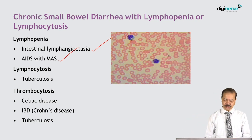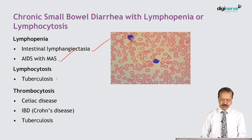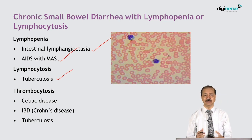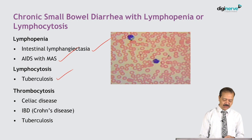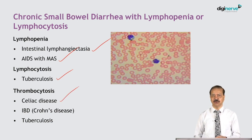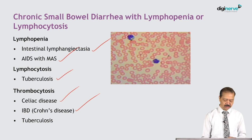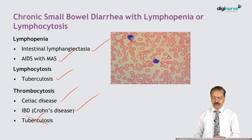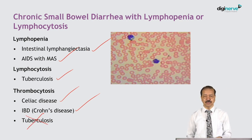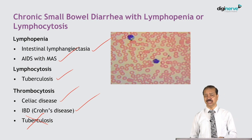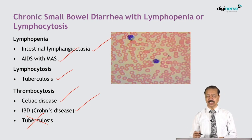Lymphocytosis may suggest tuberculosis, and thrombocytosis — meaning excess platelet count — occurs in celiac disease and inflammatory bowel disease. Celiac patients and IBD patients, including those with ulcerative colitis and Crohn's disease, can present with this finding.